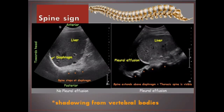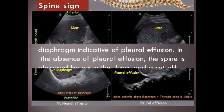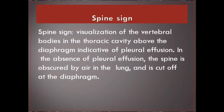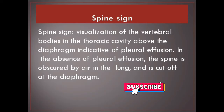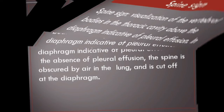Spine sign. Visualization of the vertebral bodies in the thoracic cavity above the diaphragm is indicative of pleural effusion. In the absence of pleural effusion, the spine is obscured by air in the lung and is cut off at the diaphragm.